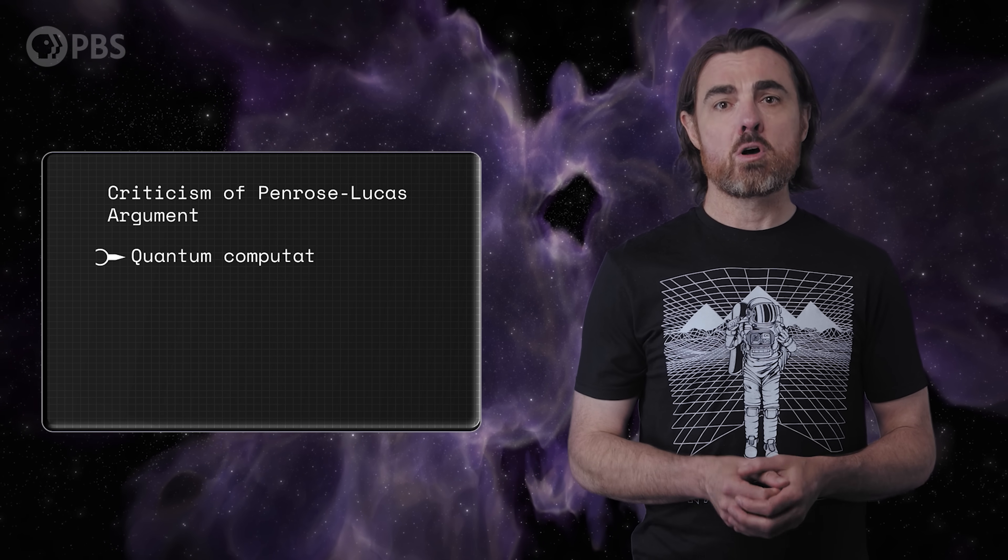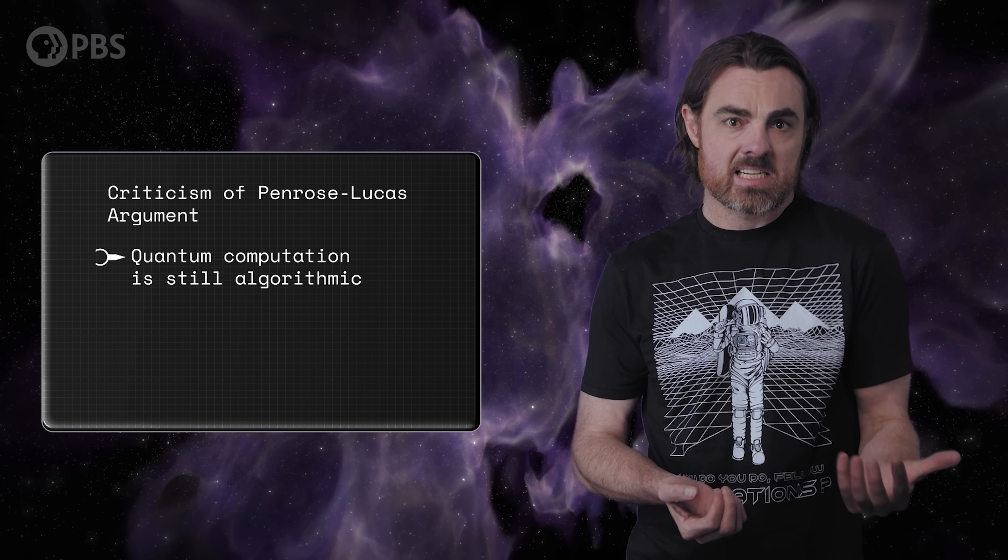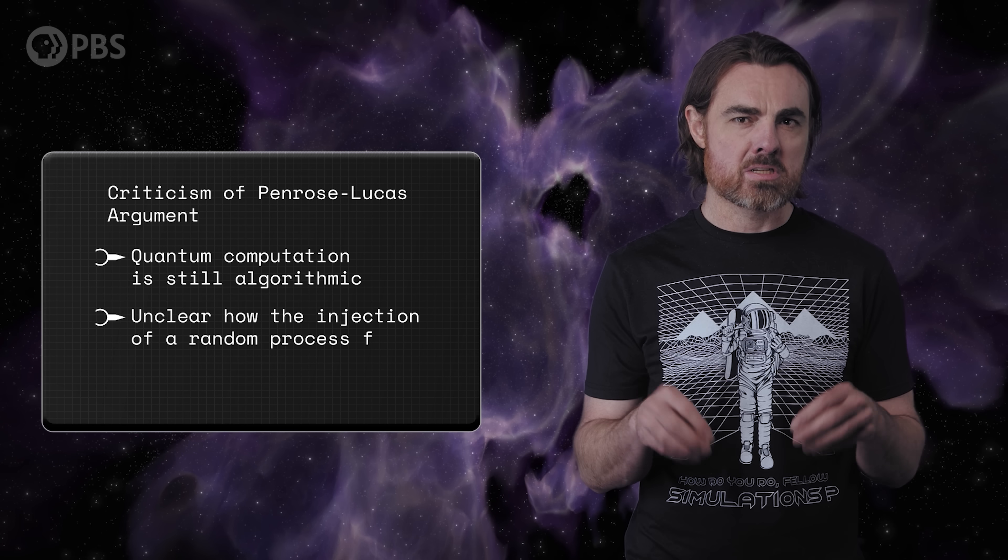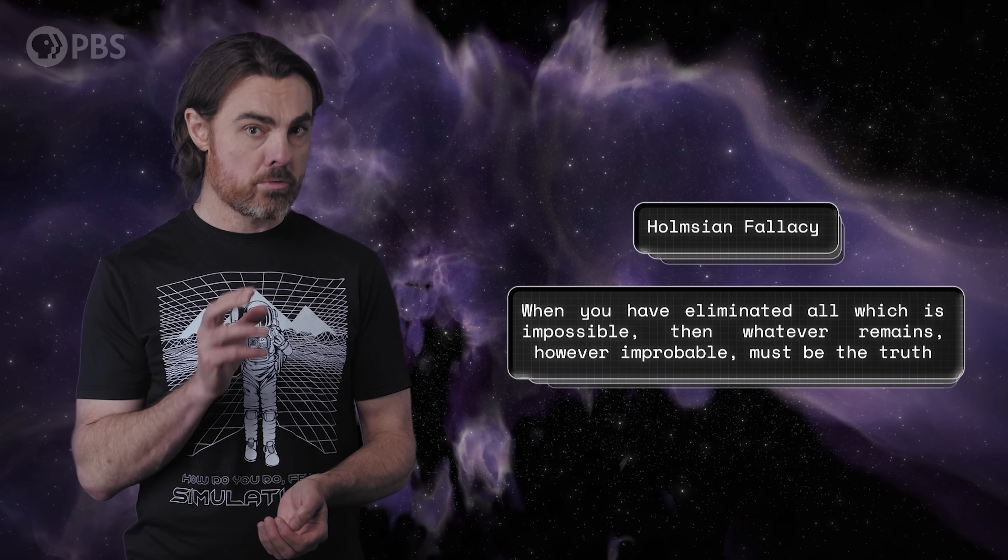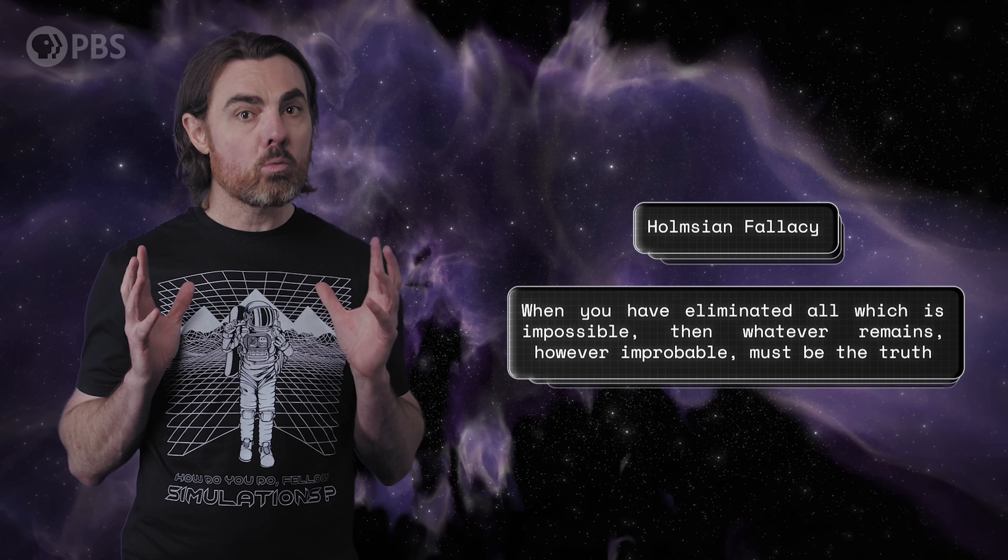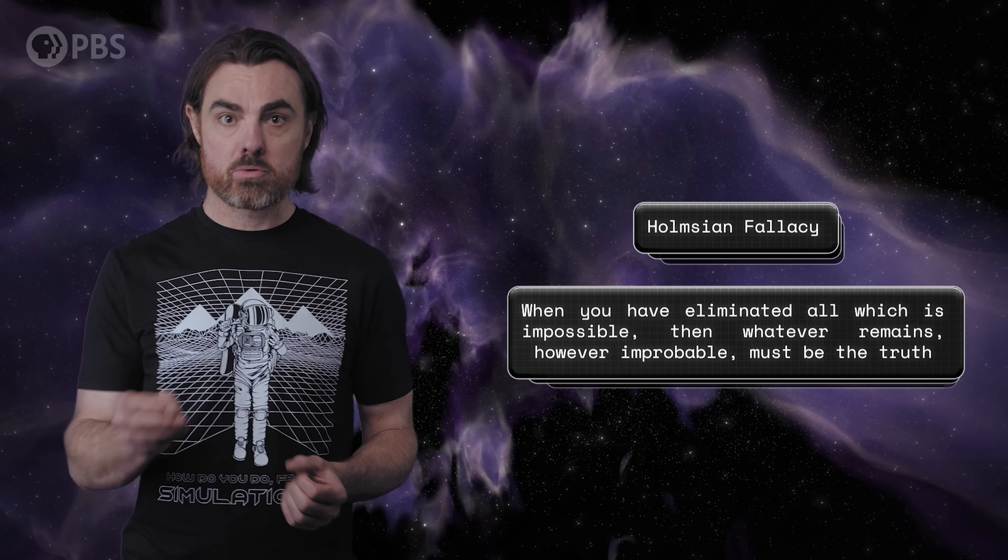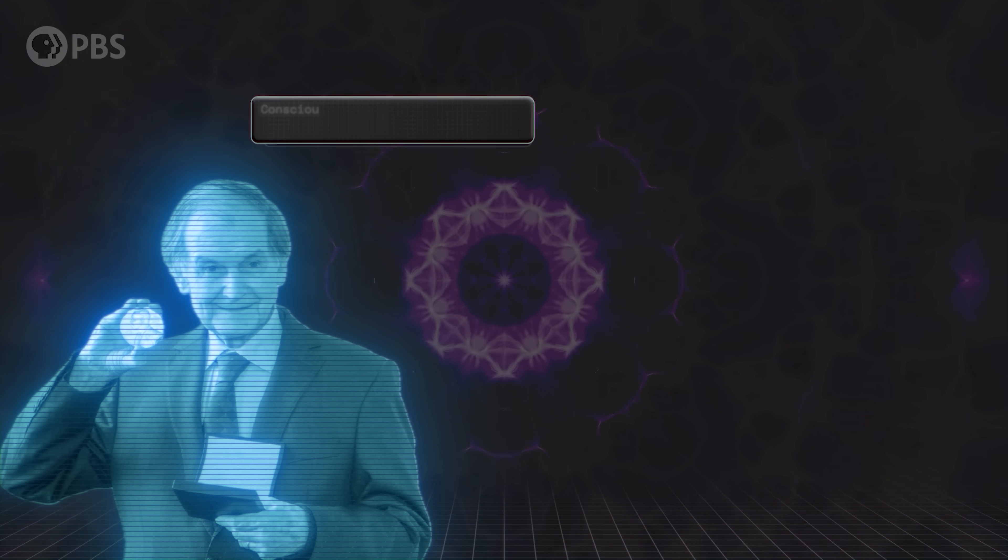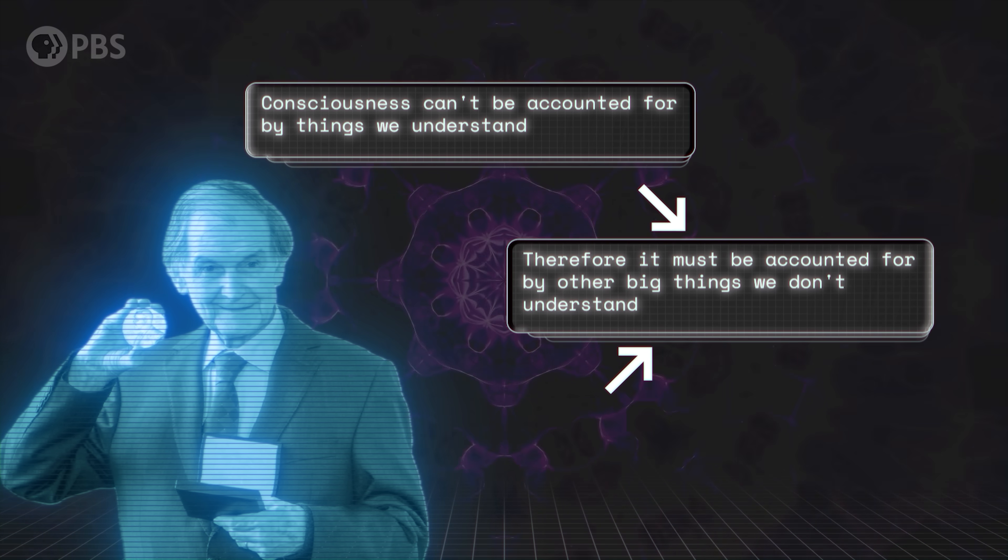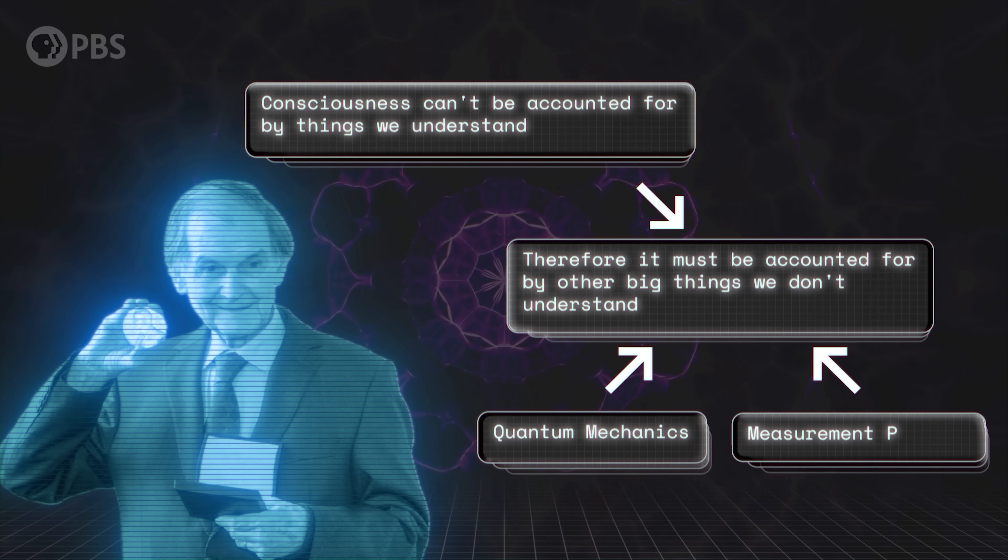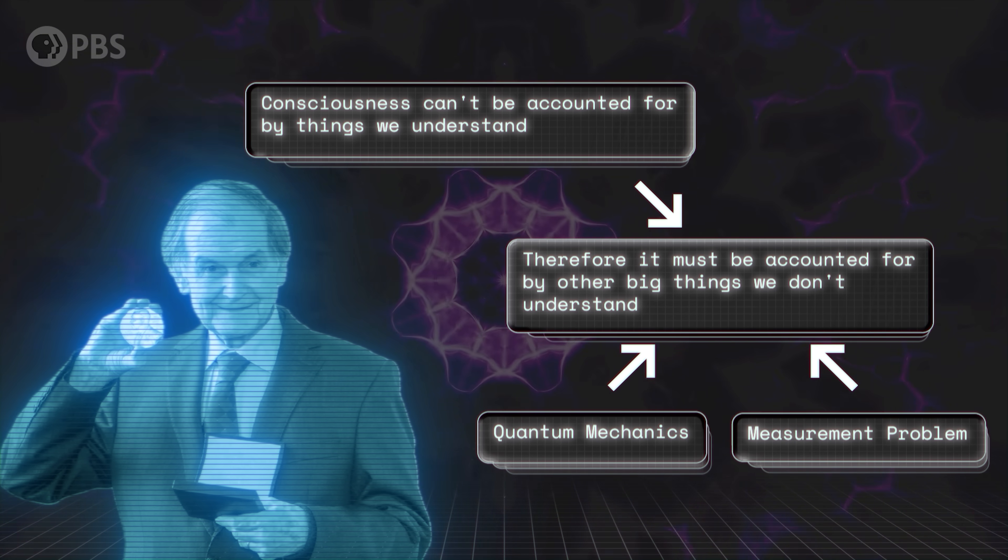There are also plenty of criticisms of this reasoning. For example, quantum computation is still algorithmic in a sense, even if not classically algorithmic. Also, it's not clear how the injection of random processes frees one from the constraints of Gödel in the way that Penrose needs. Another common criticism is that Penrose has fallen for the Holmesian fallacy. To quote the great detective Sherlock Holmes: When you have eliminated all which is impossible, then whatever remains, however improbable, must be the truth. In fact, Penrose himself has quoted Holmes in justifying the reasoning that if consciousness can't be accounted for by things we understand, then it must be accounted for by the other one big thing we don't yet understand, quantum mechanics and the measurement problem. But that assumes that Penrose has comprehensively eliminated, or is even aware of, all the other candidate mysteries, which feels presumptuous.